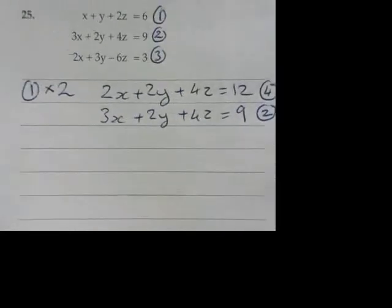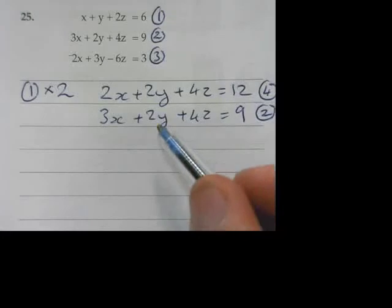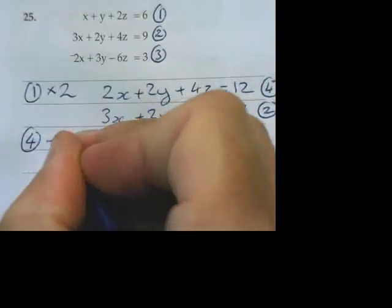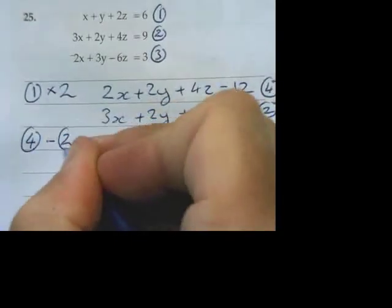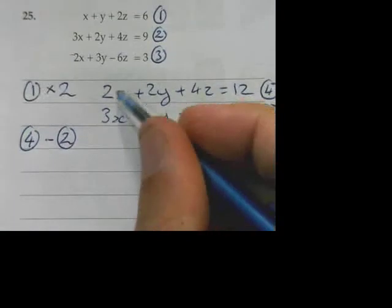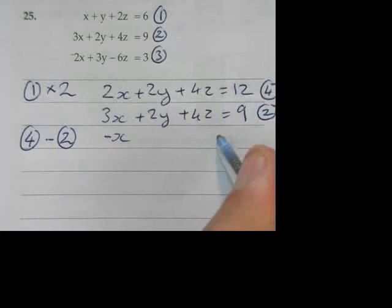So at this point now, what I'm going to say is, I'm going to do equation number four, take away equation number two. And that's why I label it, to be honest. So that actually it becomes obvious what I've been doing. So four take away two gives me negative x, 0, 0 equals 3.